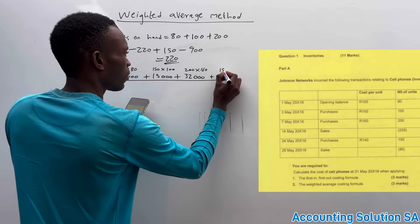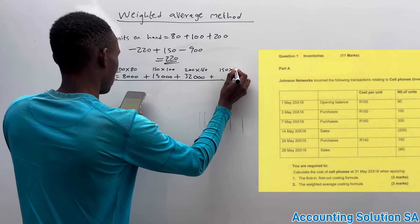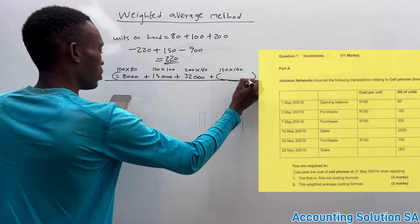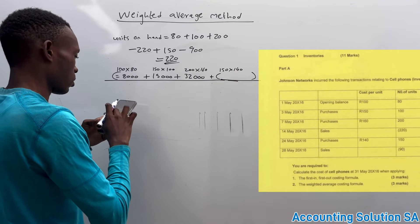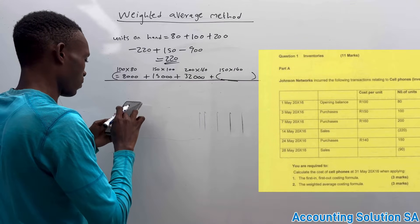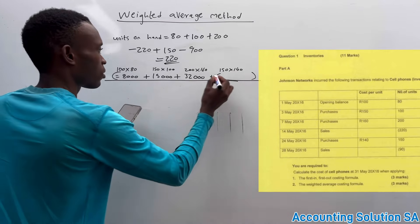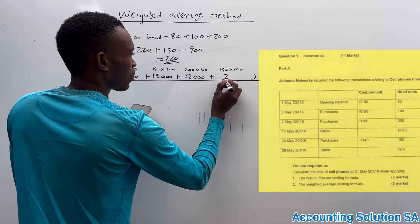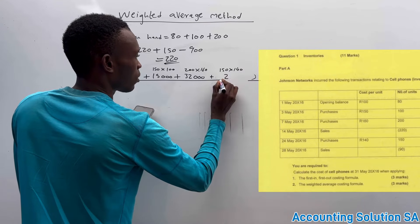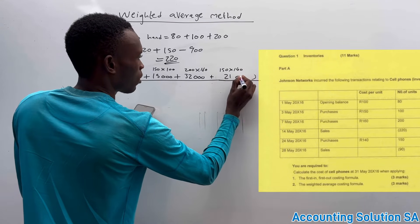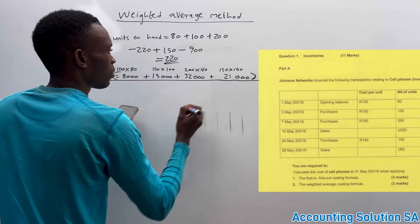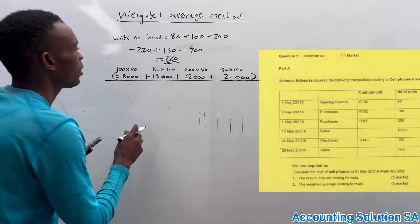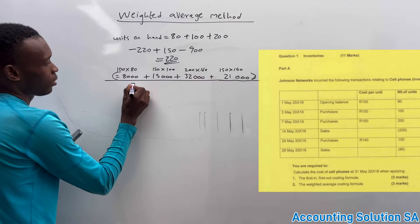It's 150 times 140. Then this one is gonna give us... 150 times 140, it's gonna give us 21,000.